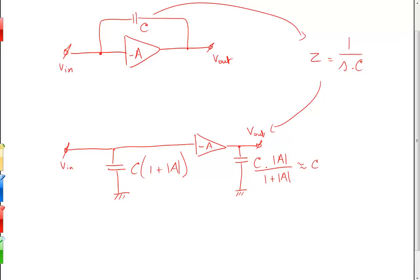As you can see, the capacitance at the input is actually much bigger now. It's equal to C times one plus the absolute value of the open loop gain of the amplifier.